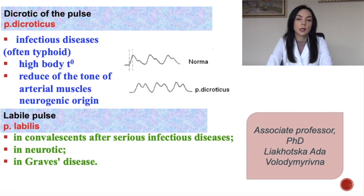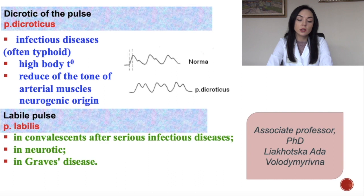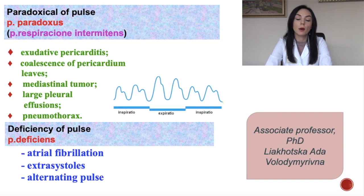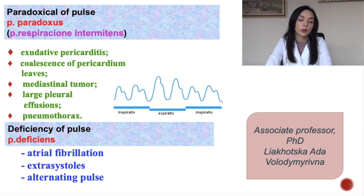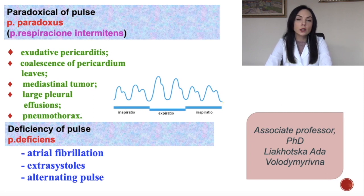Labile pulse, pulsus labilis, in convalescence can occur after serious infectious diseases, in neurotics, and in Graves disease. Paradoxical pulse, pulsus paradoxus, can be felt during exudative pericarditis, coalescence of pericardium leaves, mediastinal tumor, large pleural effusions, and pneumothorax. Pulse deficiency can be felt during atrial fibrillation, extrasystoles, and alternating pulse.